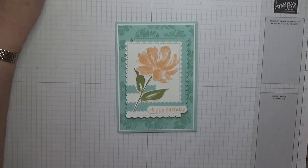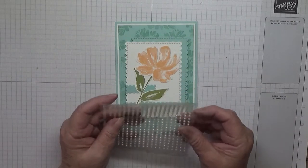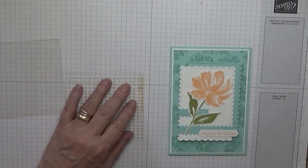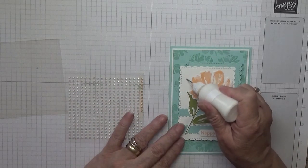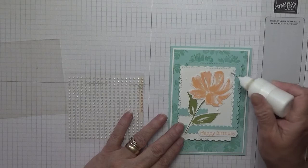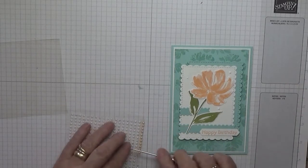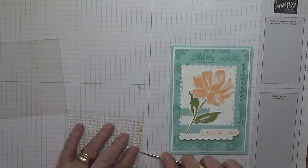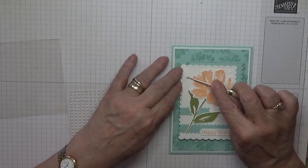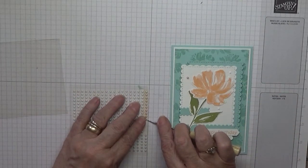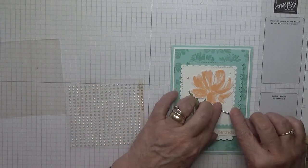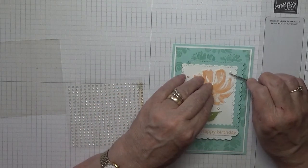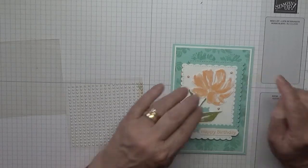And then we just need to add some gems. I've got some pearls here I colored in with Pale Papaya, and I'm just going to add three pearls. I think I went a bit mad when I colored them in. There we go.